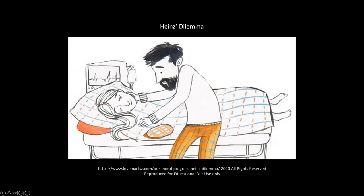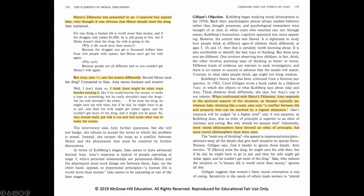As ethicists are wont to do, the Rachels use cases to make their points. One case is Heinz's dilemma: Heinz can't afford a medication that is his dying wife's only hope, so he considers stealing the drug. Should he? A couple of 11-year-olds, Jake and Amy, respond to the dilemma in revealingly different ways. Jake, thinking like a male as the Rachels infer, sees only a conflict between life and property that can be resolved by a logical deduction — namely, to steal the medication. In contrast, Amy responds to the personal aspects of the situation, as females typically do, the Rachels infer again.